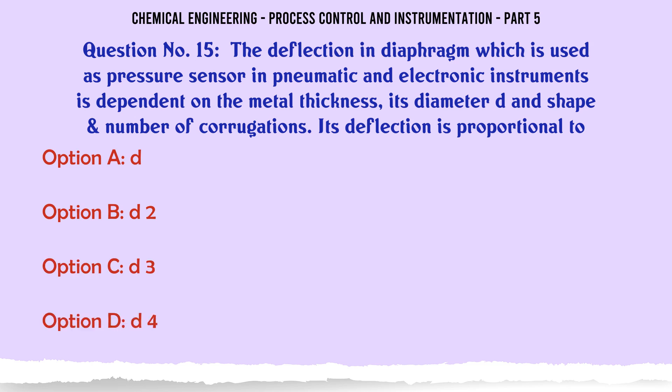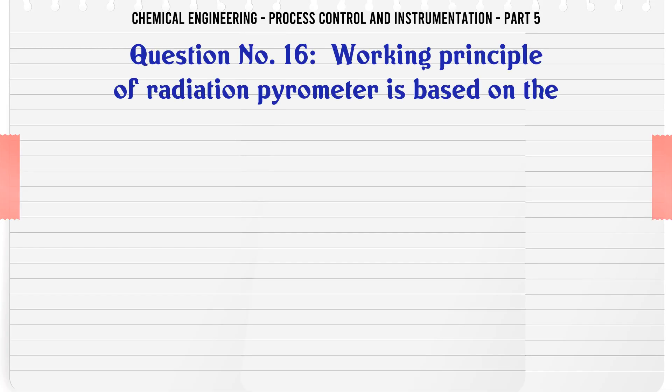The deflection in diaphragm, which is used as pressure sensor in pneumatic and electronic instruments, is dependent on the metal thickness, its diameter d, and shape number of corrugations. Its deflection is proportional to: A. d. B. d². C. d³. D. d⁴. The correct answer is d⁴.